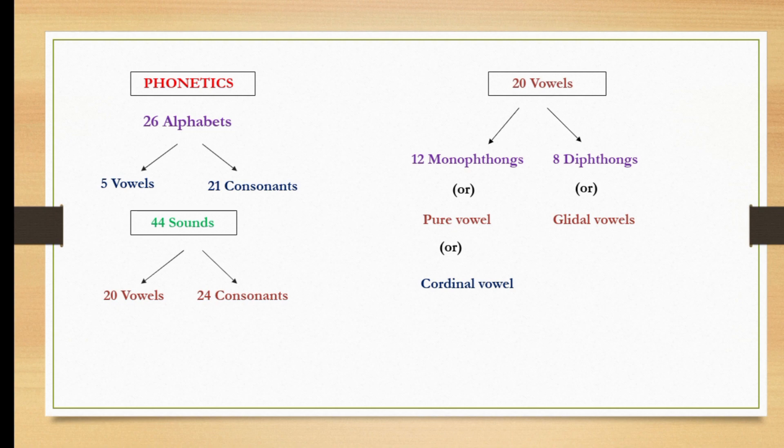We all know that how many letters in English alphabets? It's so simple, there are 26 letters in English alphabets. It is divided into two types. One is vowels, another one is consonants. How many vowels? There are 5 vowels: A, E, I, O, U. And remaining letters are called consonants. There are totally 21 consonants in English alphabets.